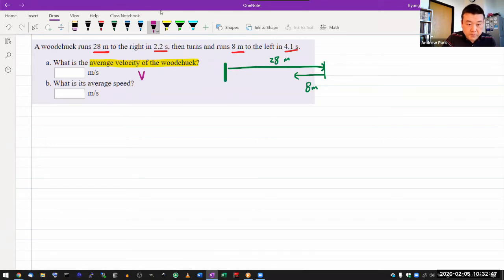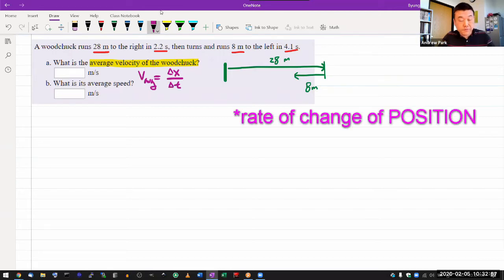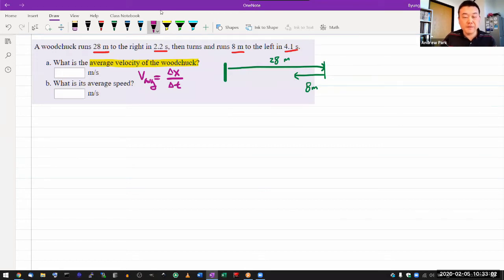the average velocity is the displacement, change in position, divided by the duration of time. Velocity is the rate of change of position. The average is the non-infinitesimal version of it. And technically, it's vector quantities. Although in this question, I think we're just giving magnitude.